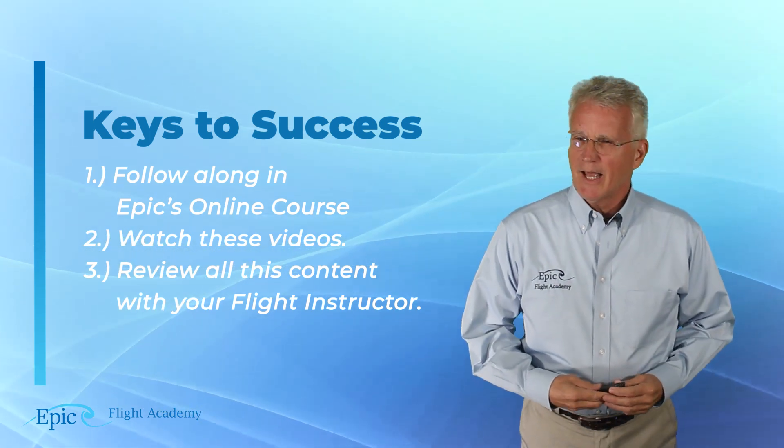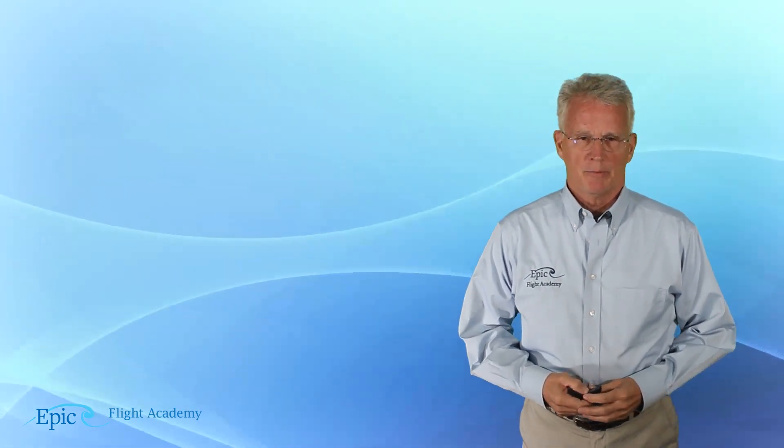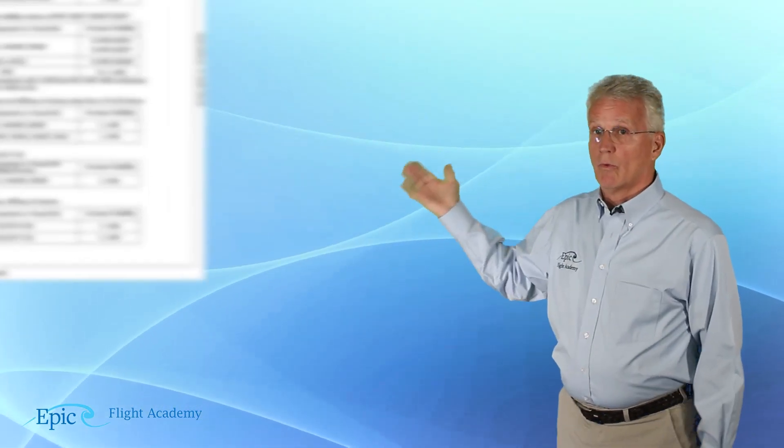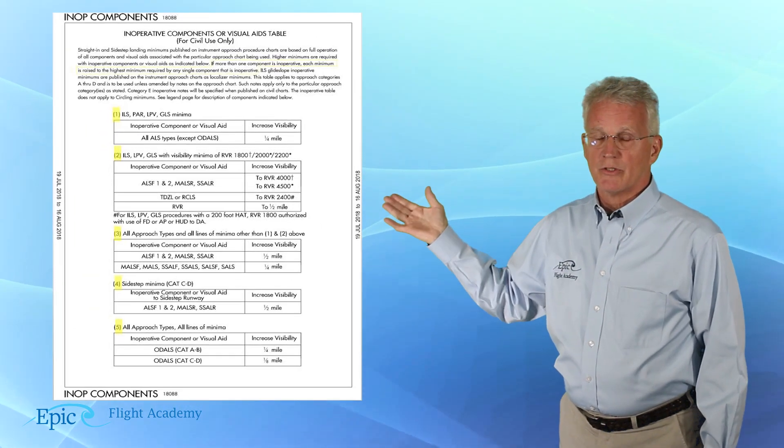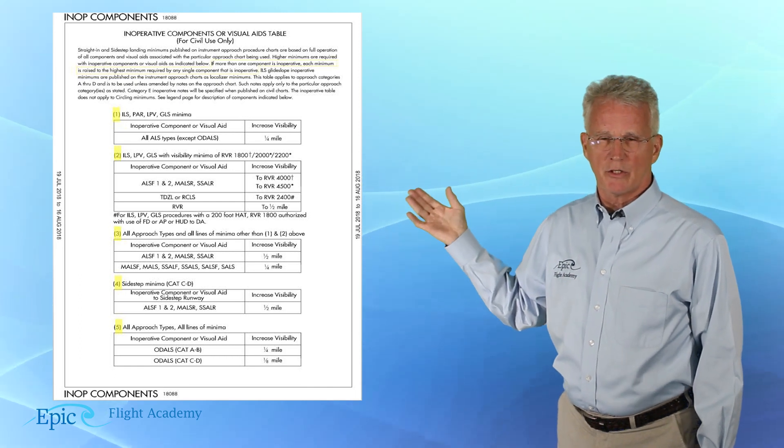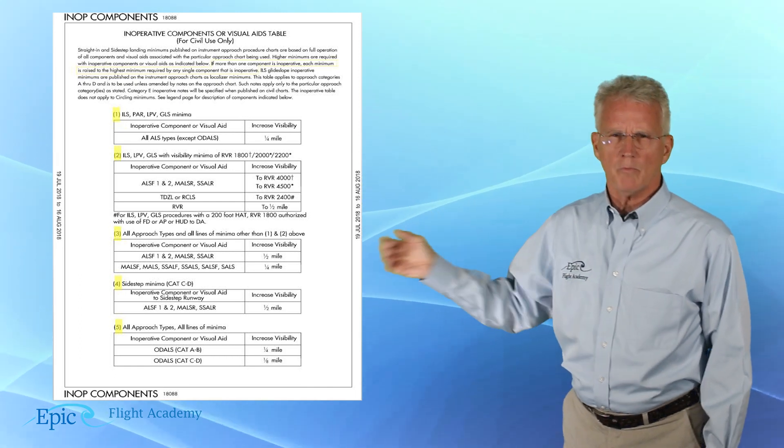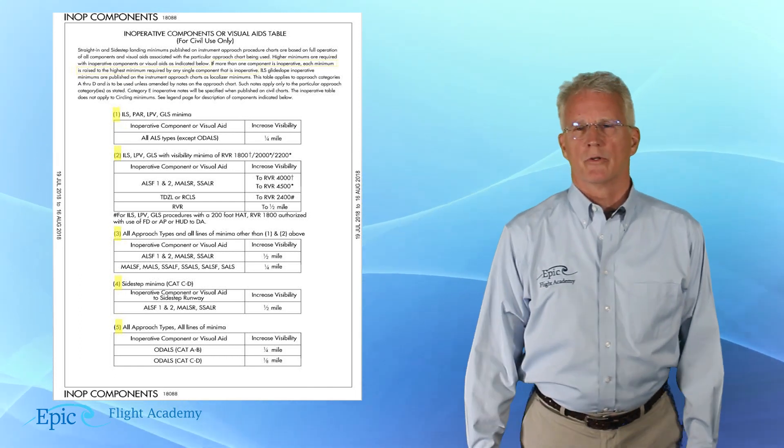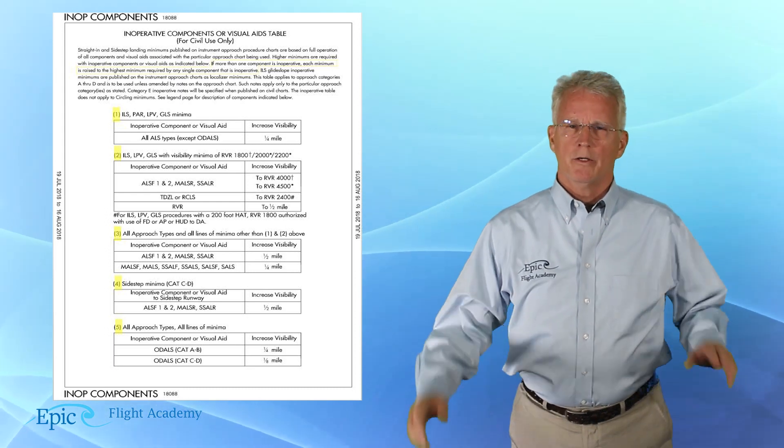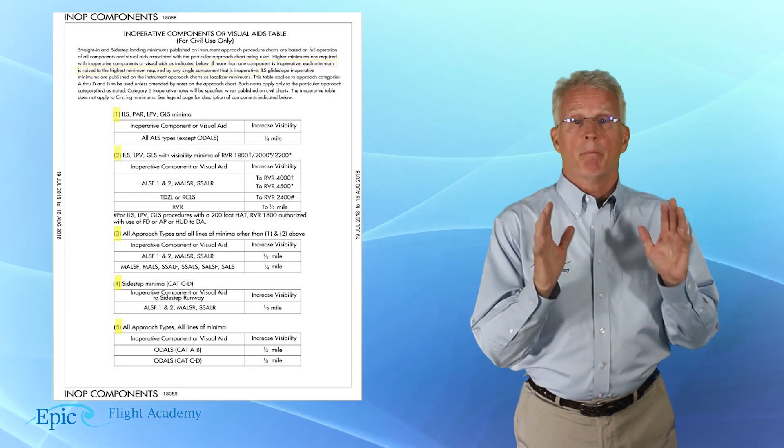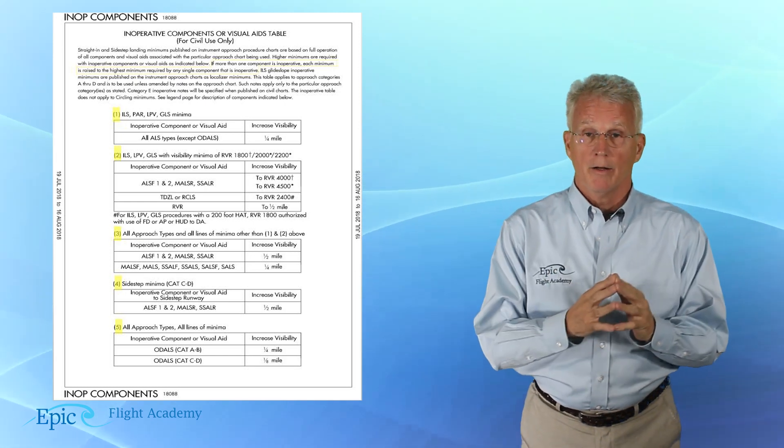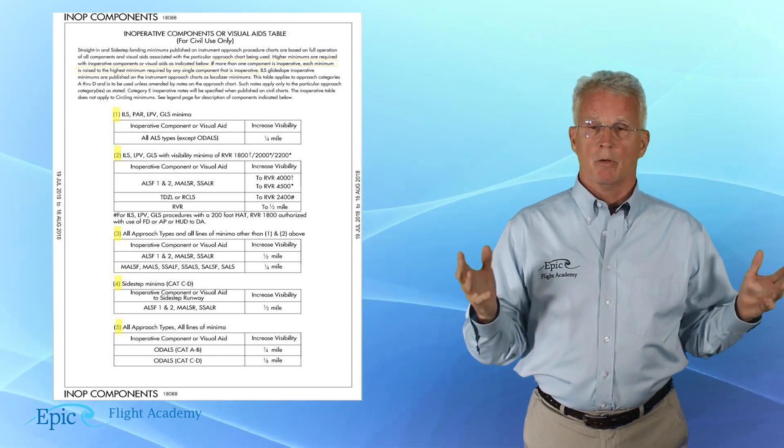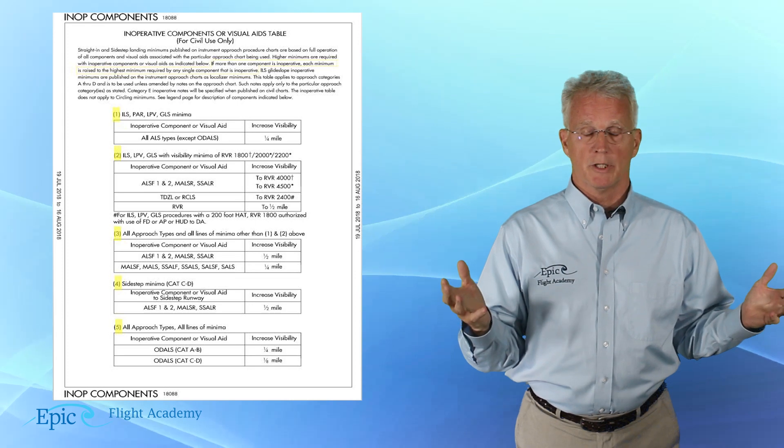Back to that inoperative components table, you can see a copy of that right here. And notice that it has five sections. Before we get into those five sections, I wonder how it is that a pilot would be made aware of inoperative components or visual aids.